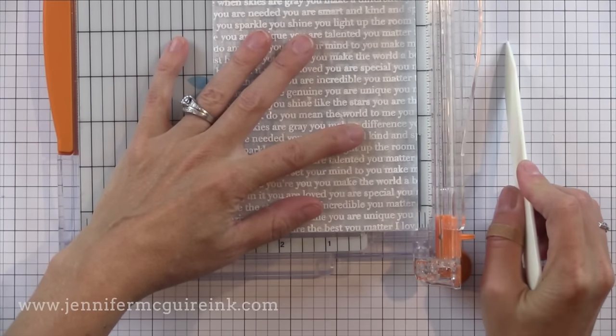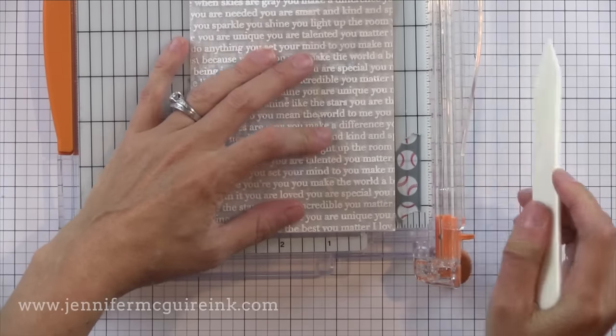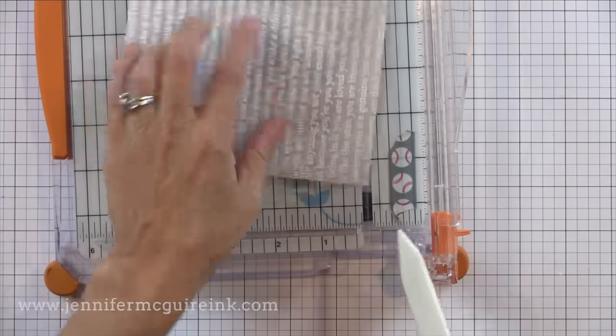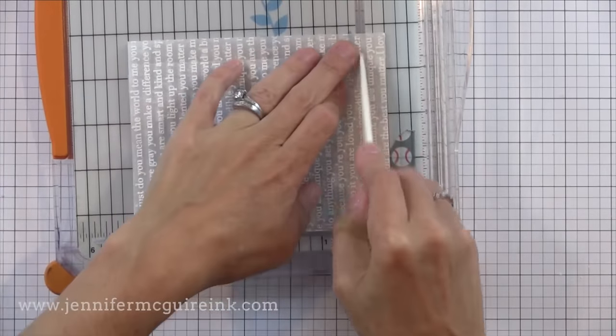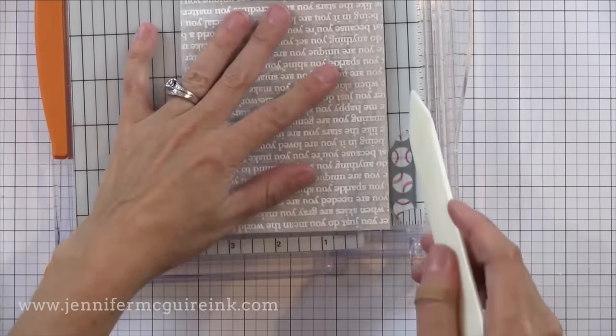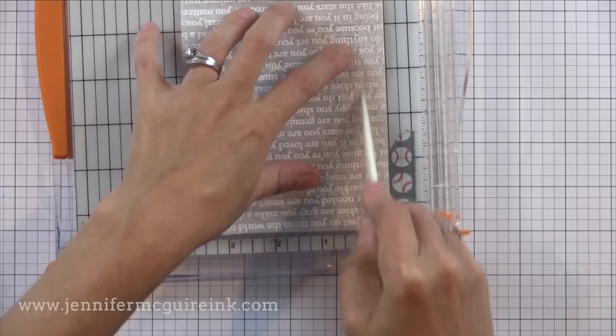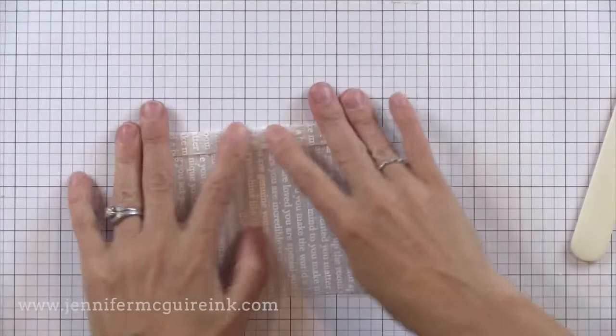Now here's the vellum gift bag. This time I'm going to score it in about a half inch from the edges. So you'll see I'm scoring it in a little bit less at a half inch from the three edges that we did not cut. So this will give us a different size bag.